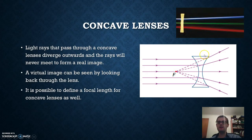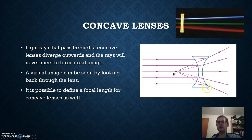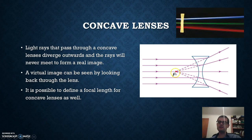A concave lens refracts light so that the rays are bent outwards, producing diverging light rays. Because these rays never meet at a point, you don't get a real image — it's impossible unless you add a second lens. However, if you trace these diverging rays backwards, they appear to meet at a point F shown by dashed lines, which is a virtual focal point. This means you can still define a focal length for a concave lens as the distance between its centre and that virtual point F.